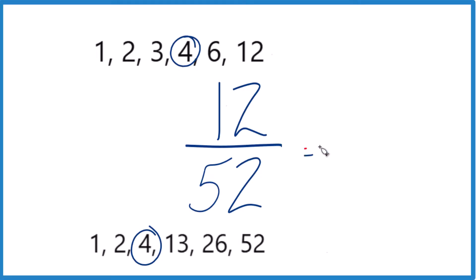If we divide 12 by 4, we get 3. 3 times 4 is 12. And if we divide 52 by 4, we actually end up with 13. 13 times 4 is 52. So when we simplify 12/52, we get 3/13.